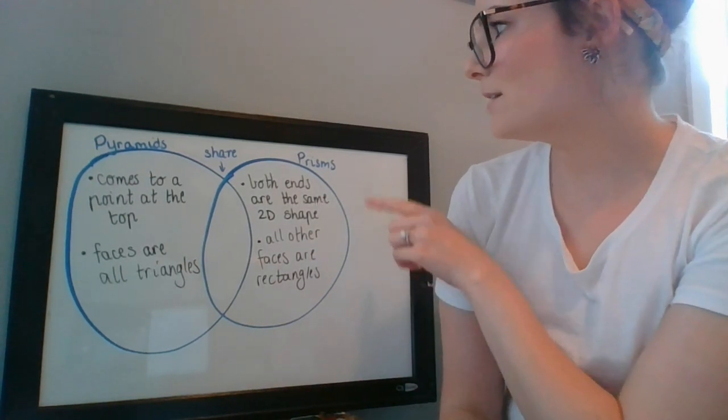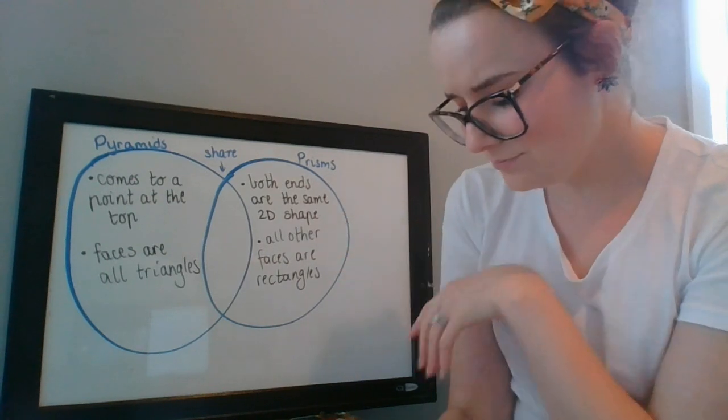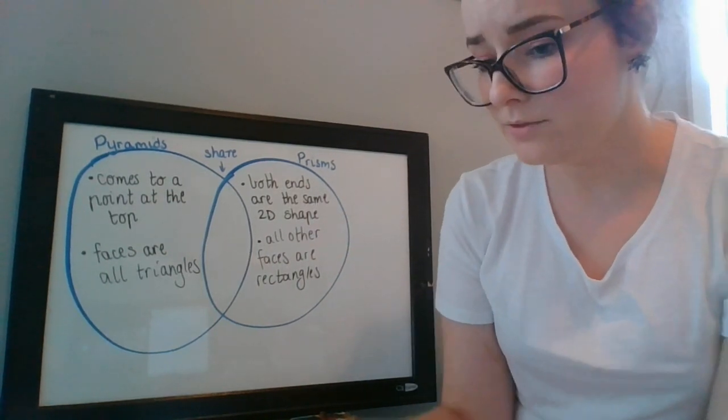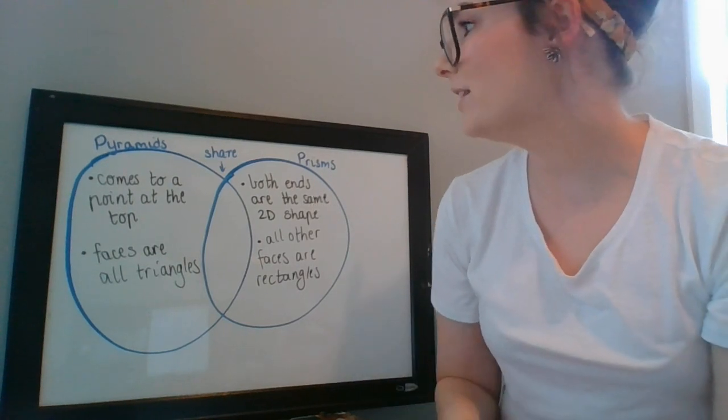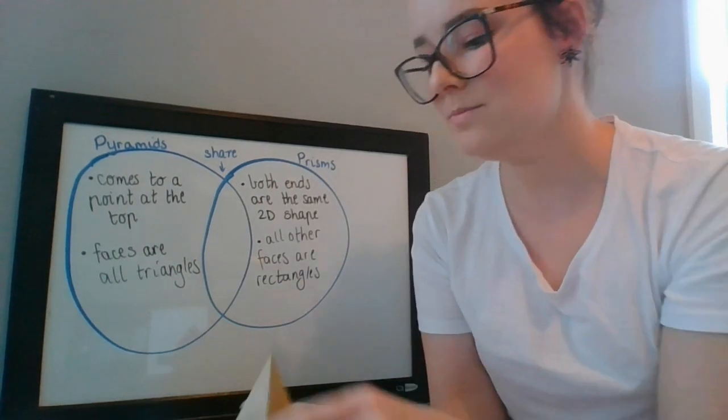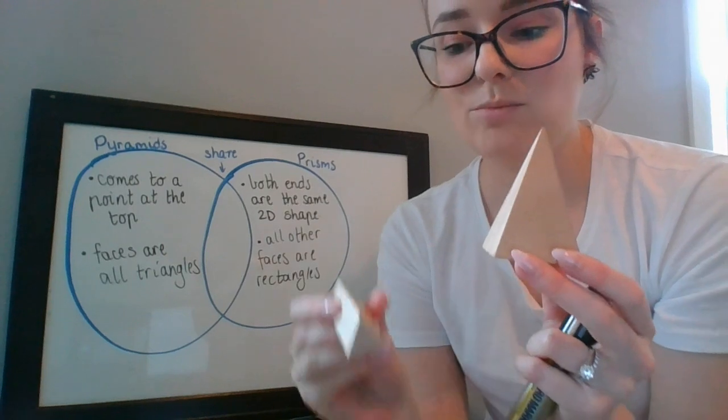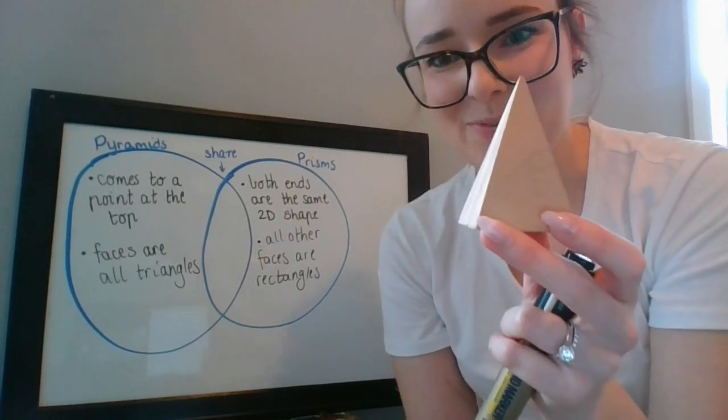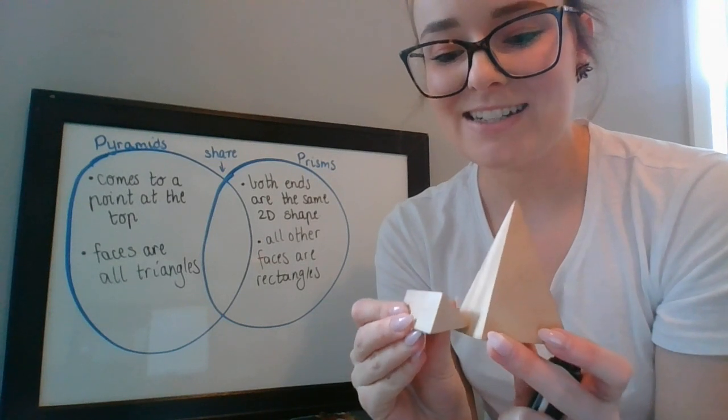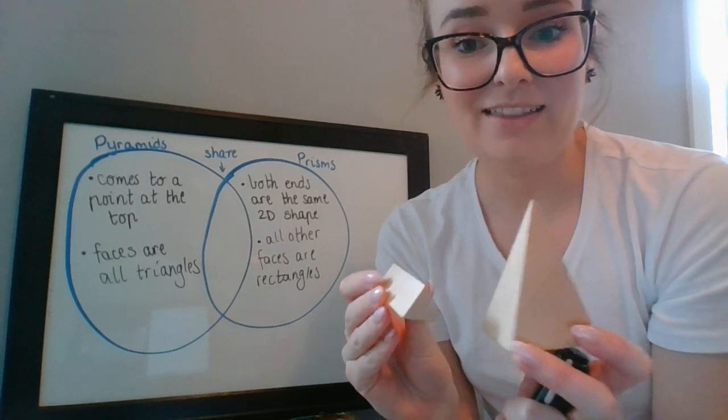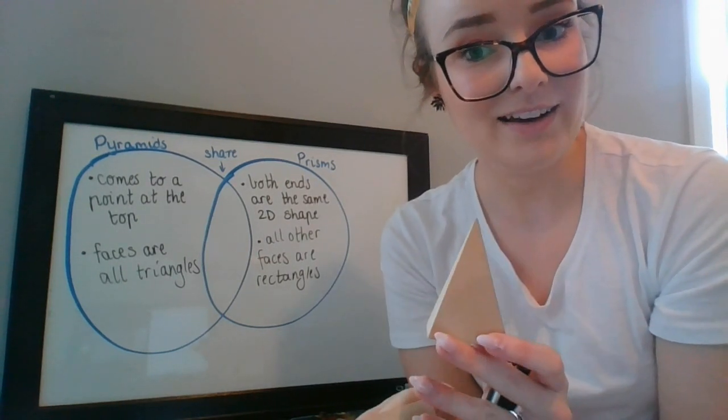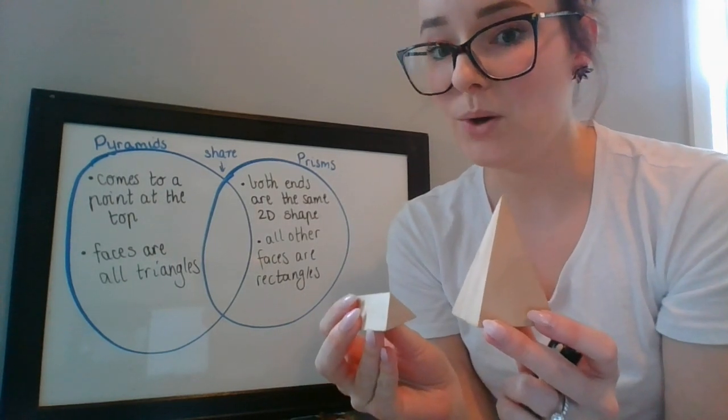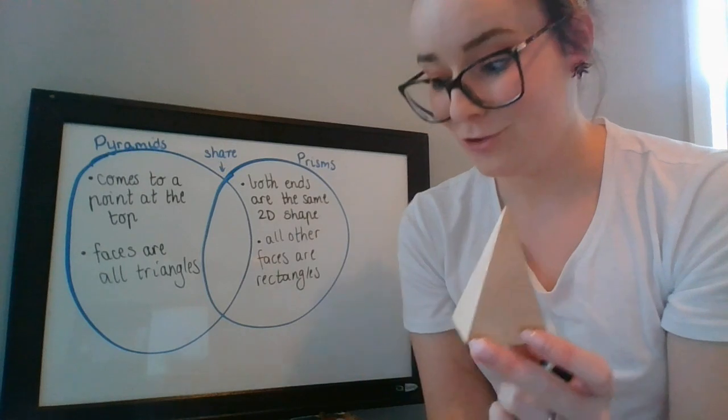Now we need to find something that they share. Now this was a little bit tricky but there are a couple of obvious things. We know that these two shapes, so prisms and pyramids—I should have said it the other way—prisms, pyramids, we know that they share the fact that they are, they're not flat like a pancake. They're popped up which means that they are both 3D shapes.